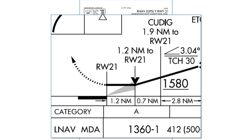We're also basing it off of what's called the vertical descent angle. Here, it's indicated as being 3.04 degrees. If there were no vertical descent angle published, we'd use the angle the PAPI lights make. So the positioning of the VDP is based on where the descent angle will take us from the MDA to the touchdown zone. If we start a descent before that point, we'll need to descend at a more shallow slope. If we start after that point, we'll either need to descend fast or land long.